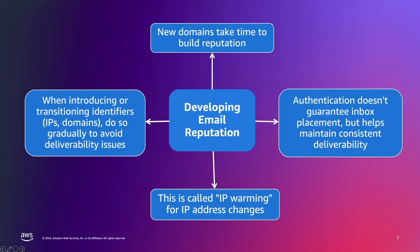When you need to transition to new identifiers like IP addresses or sending domains, it is crucial that you do so gradually. This gradual ramp-up, which is often called IP warming, allows mailbox providers to observe the new sending patterns and adjust your reputation accordingly, without traffic volume spikes triggering sudden deliverability issues such as reputation blocks or throttling.